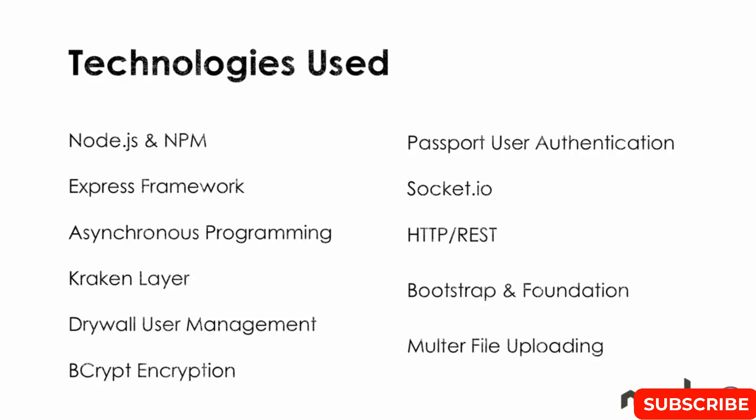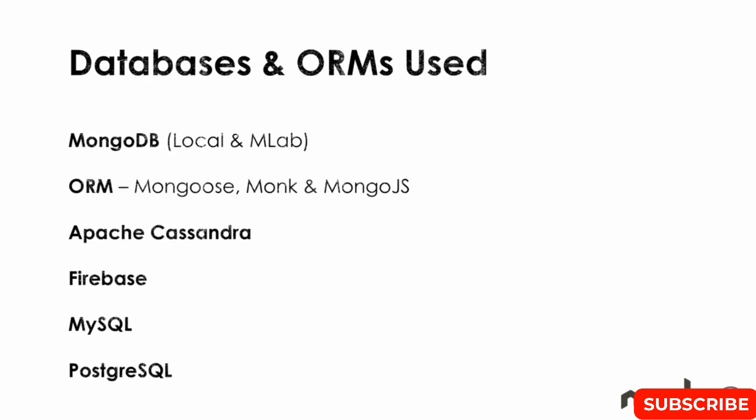We'll also use HTTP and REST, Bootstrap and Foundation as front-end CSS frameworks, and Multer which is a file uploading module. For databases and ORMs, MongoDB is the most popular — we'll install it locally and also use a remote MongoDB database with mLab. ORMs we'll use include Mongoose, Monk, and the MongoDB.js driver.